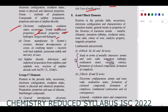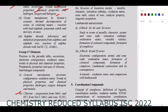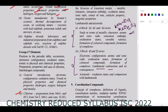For D & F Block Elements: nature, radius, variation of ionization energy, variable valency, colored compound formation, and complex formation are present. The 3d, 4d, and 5d series and the f-block lanthanide and actinoid series are covered. However, the preparation and properties of K₂Cr₂O₇ and KMnO₄ are completely removed from this chapter.